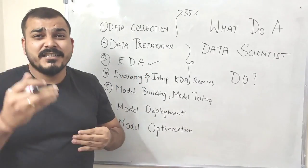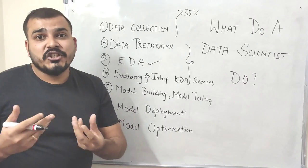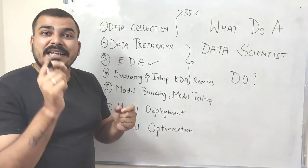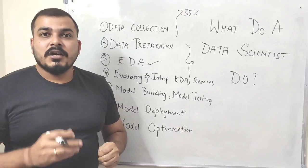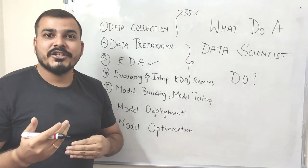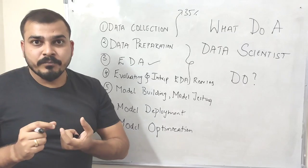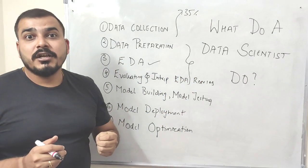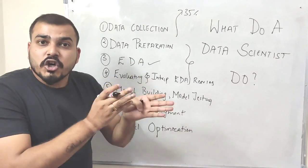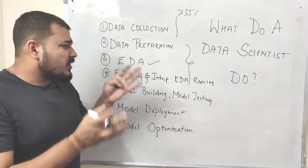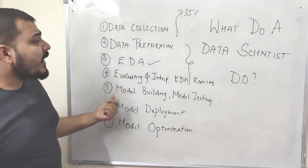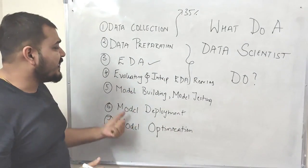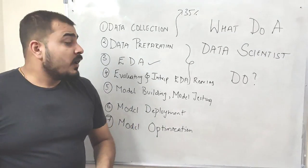During feature engineering, we also perform feature selection, because not all features are required for the machine learning use case. We apply statistical tools like Pearson correlation and extra tree classifiers to understand which features are most important. We cannot take all columns — for example, if we have a thousand columns, feature selection helps us understand which independent features are directly correlated to our dependent feature. Once the data is clean, in tabular format with all features ready, we move to model building.